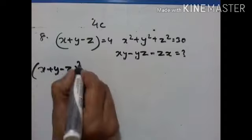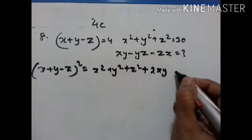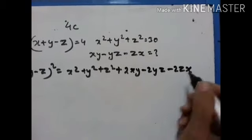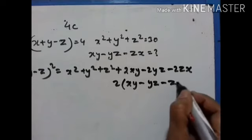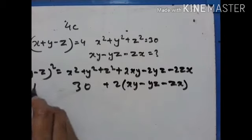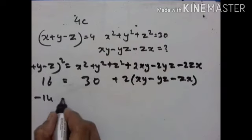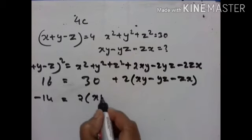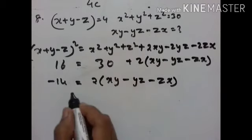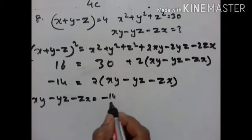Last problem: (x plus y minus z)² equals x square plus y square plus z square plus 2 into xy minus 2yz minus 2zx. We can take 2 common: xy minus yz minus zx. Given x square plus y square plus z square equals 30 and x plus y minus z equals 4. So 4 into 4 equals 16, and 16 minus 30 equals minus 14. Thus 2 into xy minus yz minus zx equals minus 14, so xy minus yz minus zx equals minus 14 divided by 2, which equals minus 7.